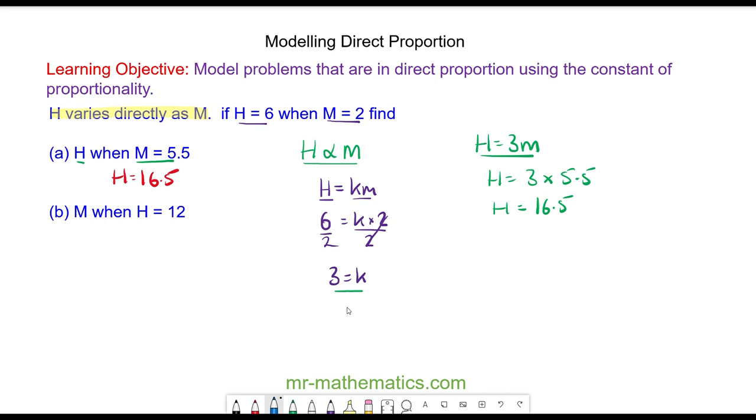For part b, we're going to use the same model, h equals 3m. But now we have h equals 12. So 12 equals 3m. Divide both sides by 3, and m equals 4.